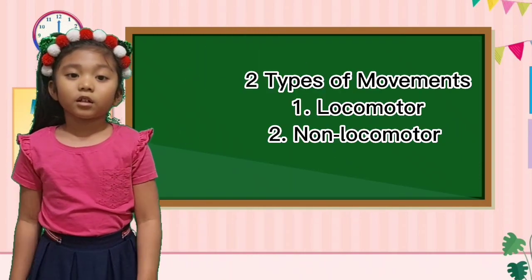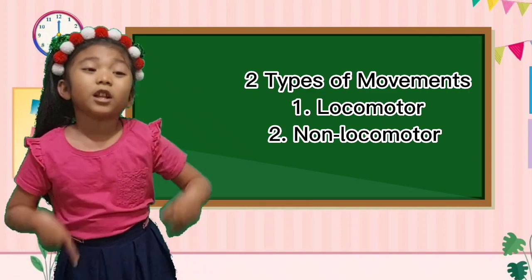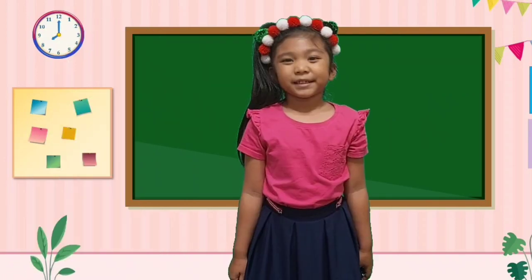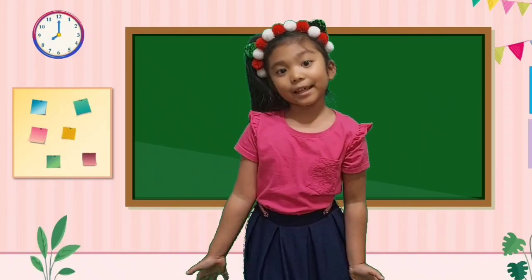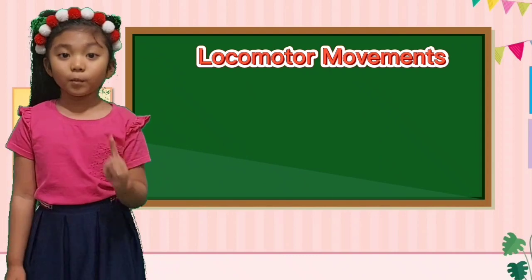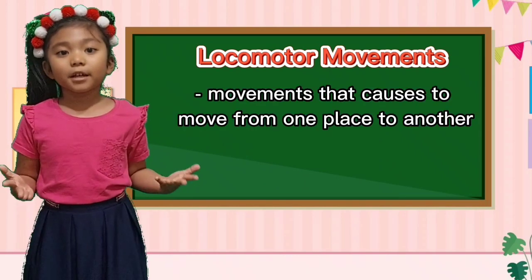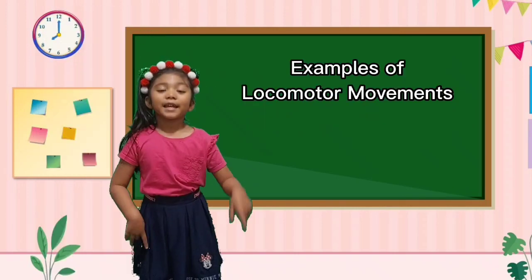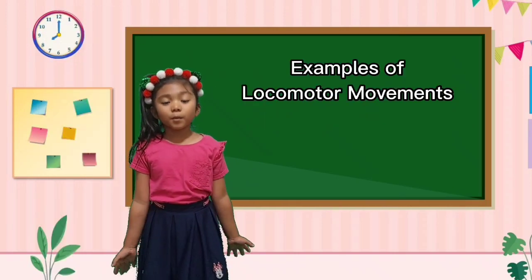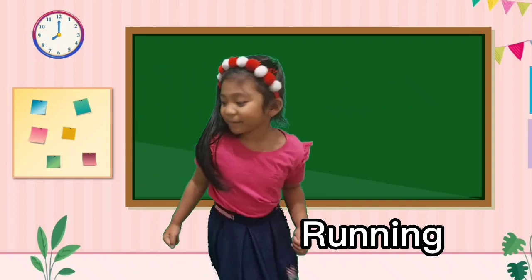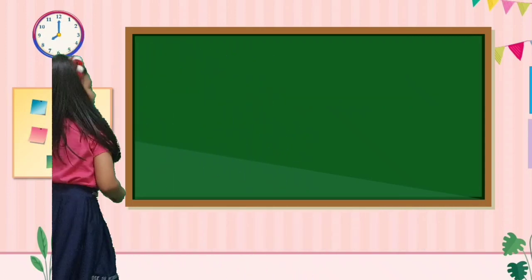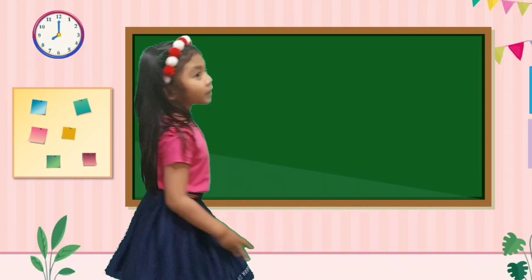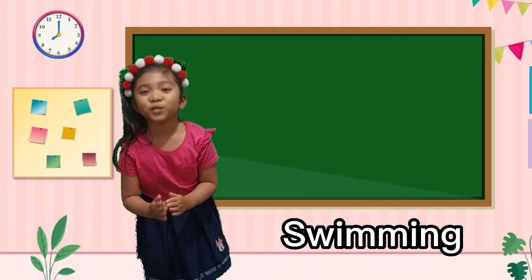Remember, we learned two types of movements: locomotor movements and non-locomotor movements. Let's review their meaning. First, the locomotor movements — the movement that causes you to move from one place to another. Examples of locomotor movements are running, walking, and swimming.